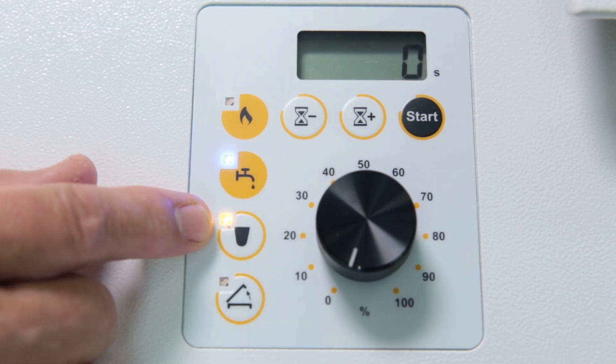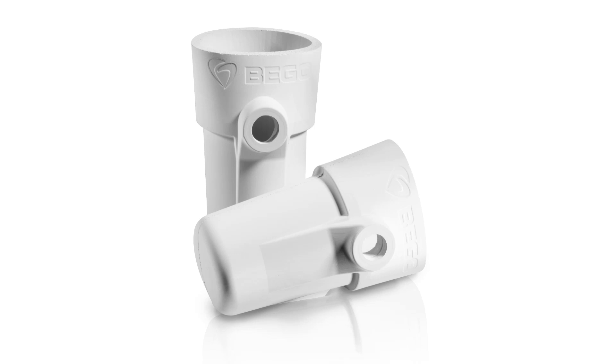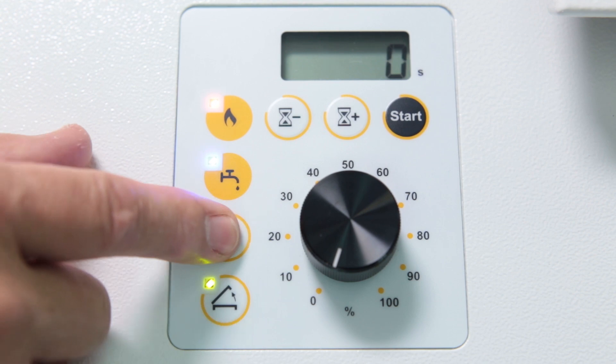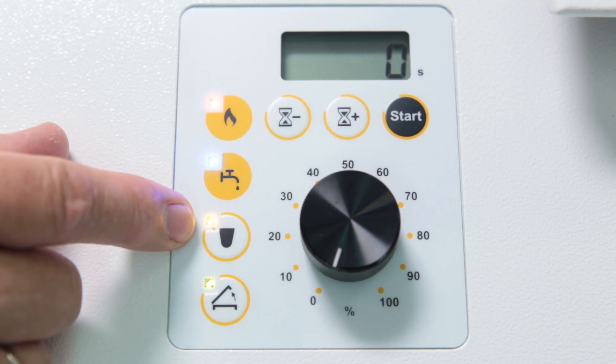This button indicates which crucible or insert is being used. In this case, it is a graphite insert. Ceramic or glass carbon inserts are also possible. It is recommended to use original Fornax Ceramic Crucible FC and matching inserts. Pressing the button selects the insert and the associated speed.